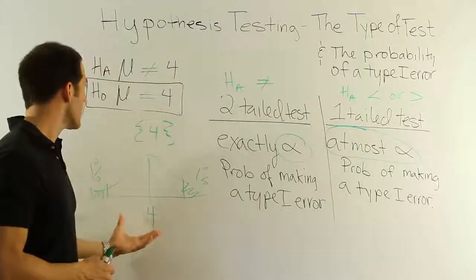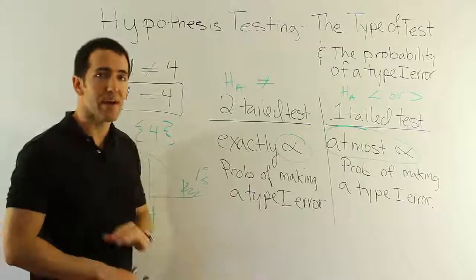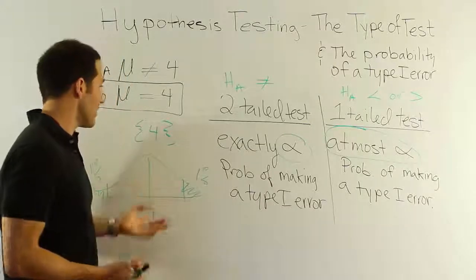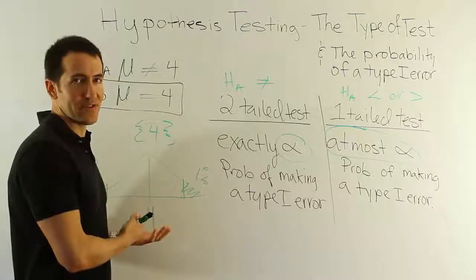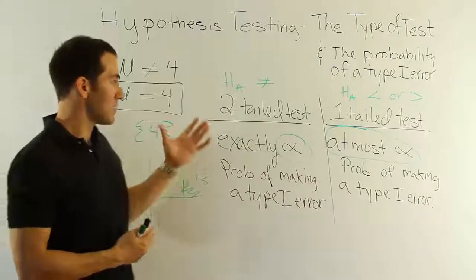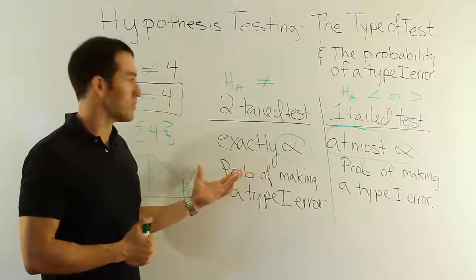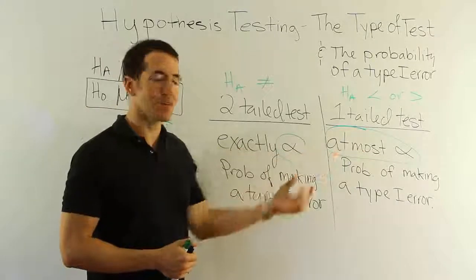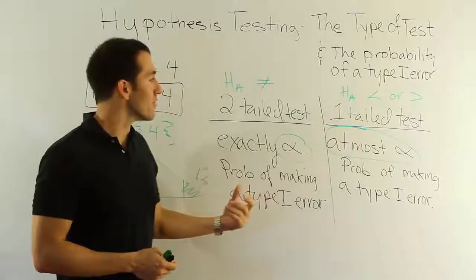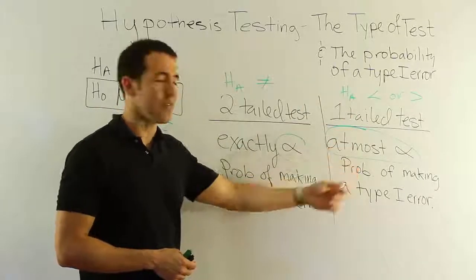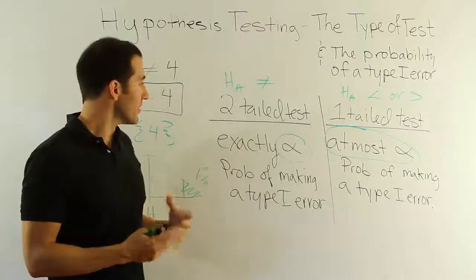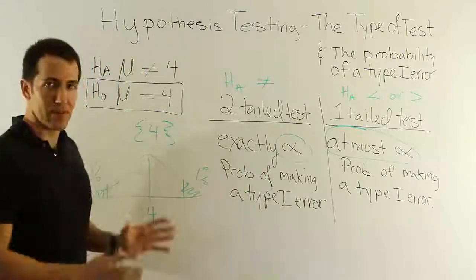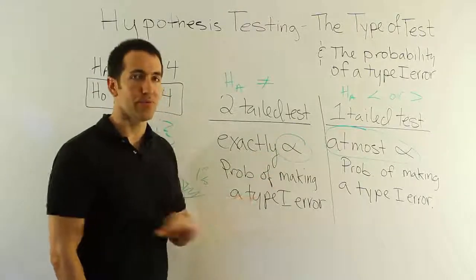So hopefully you understood this little discussion. If you didn't, it's not really that important. I would say that it's probably one in a thousand elementary stats students that really understand this. In fact, many elementary stats textbooks will not even say this. They'll just always say it's alpha. They don't even bother to explain that in a one-tailed test it's only at most alpha and in a two-tailed test it's exactly alpha. So if you didn't get this discussion, that's okay. You can just memorize these two rules. It's really simple.